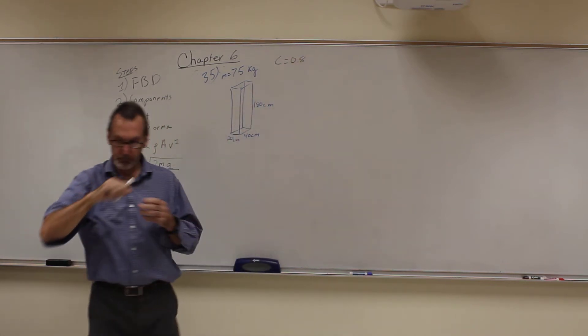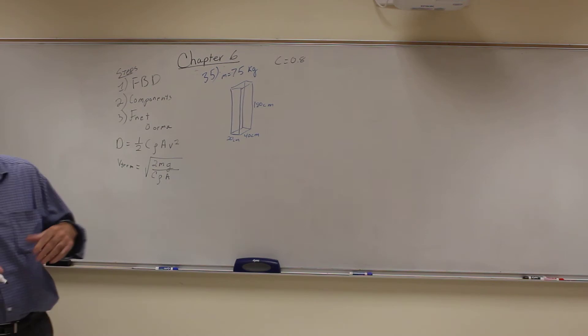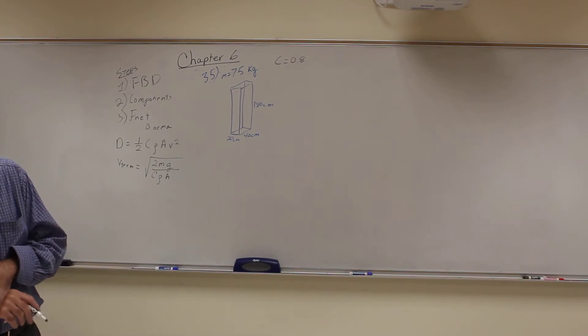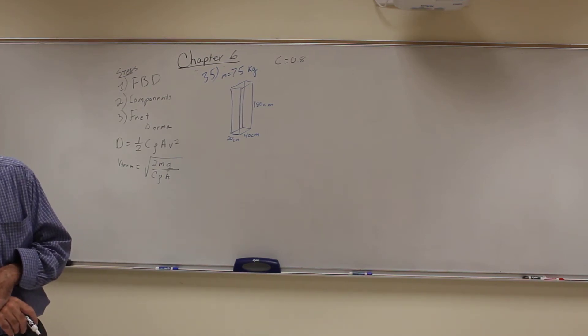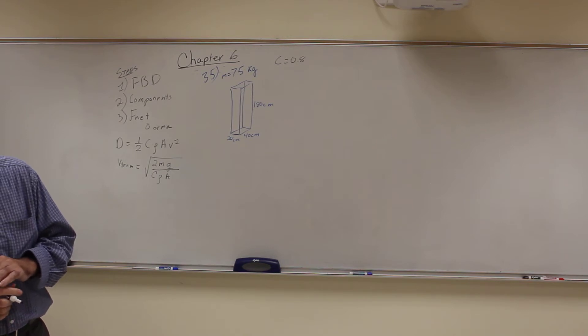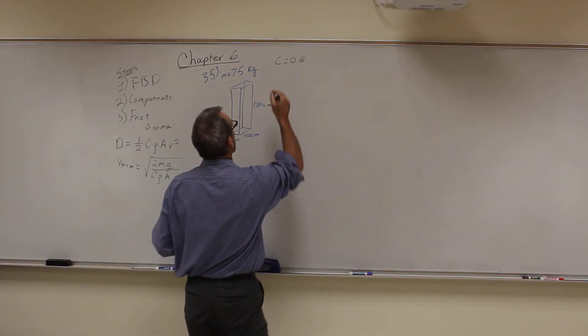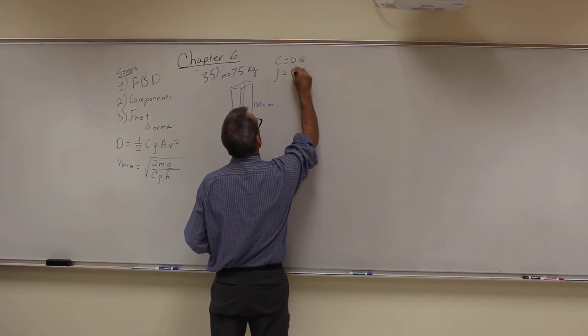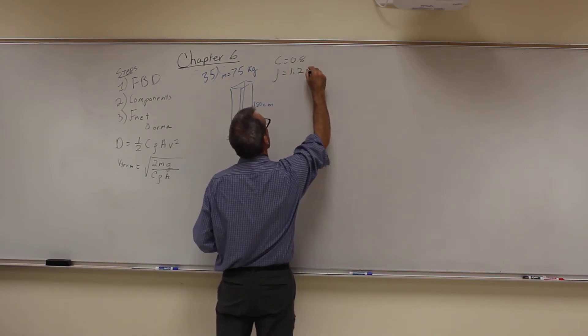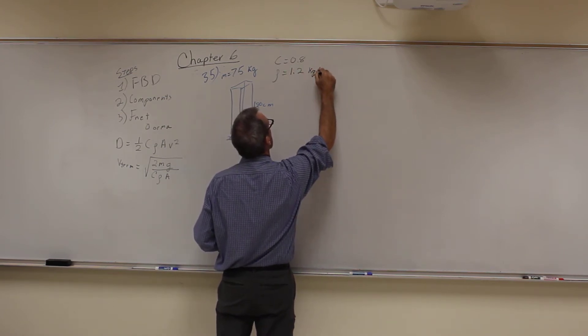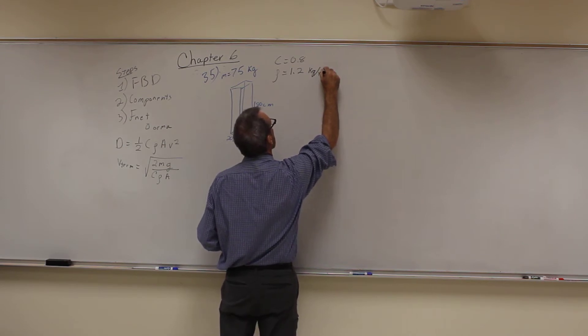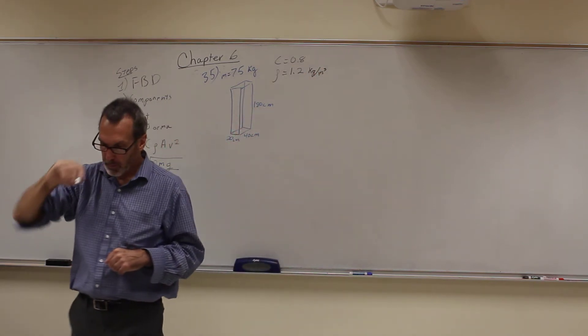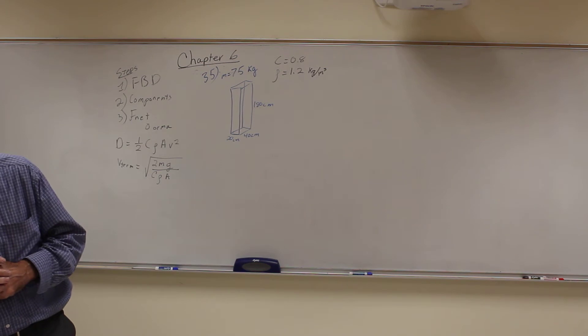We are given—you have to read the textbook sometimes to see what the values are—they give you the air density rho is equal to 1.2 kilograms per cubic meter. C does not have any units, by the way.